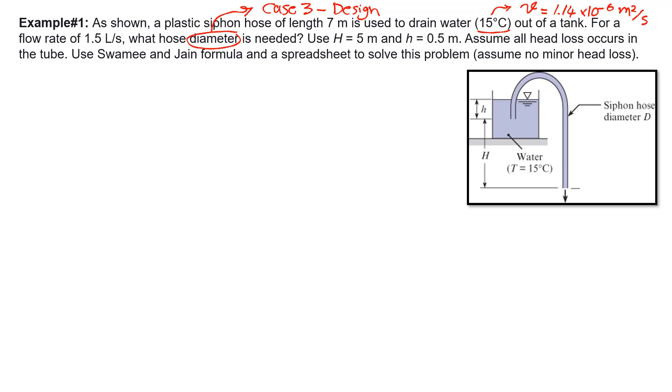All other variables are given to us. We are going to assume that the only head loss is friction head loss and no minor head losses. The difference between this problem and previous ones is that we are going to use Swamy and Jain formula to find the friction factor F. Also, we are going to use a spreadsheet instead of going back and forth in the Moody diagram, which will make our job easier and faster.